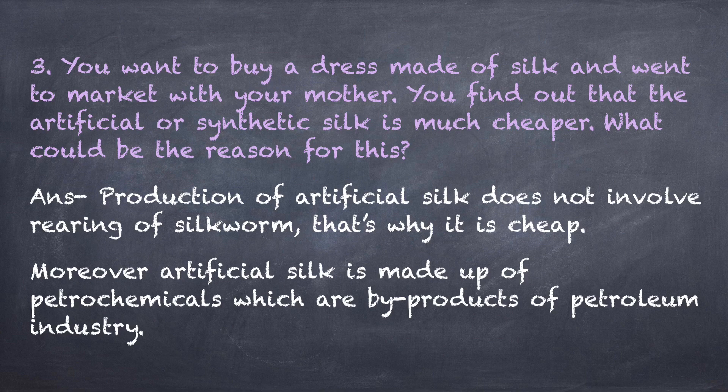Third question: You want to buy a dress made of silk and went to market with your mother. You find out that artificial or synthetic silk is much cheaper. What could be the reason for this? Answer: Production of artificial silk does not involve rearing of silkworm, that is why it is cheap. Moreover, artificial silk is made up of petrochemicals which are byproducts of the petroleum industry.